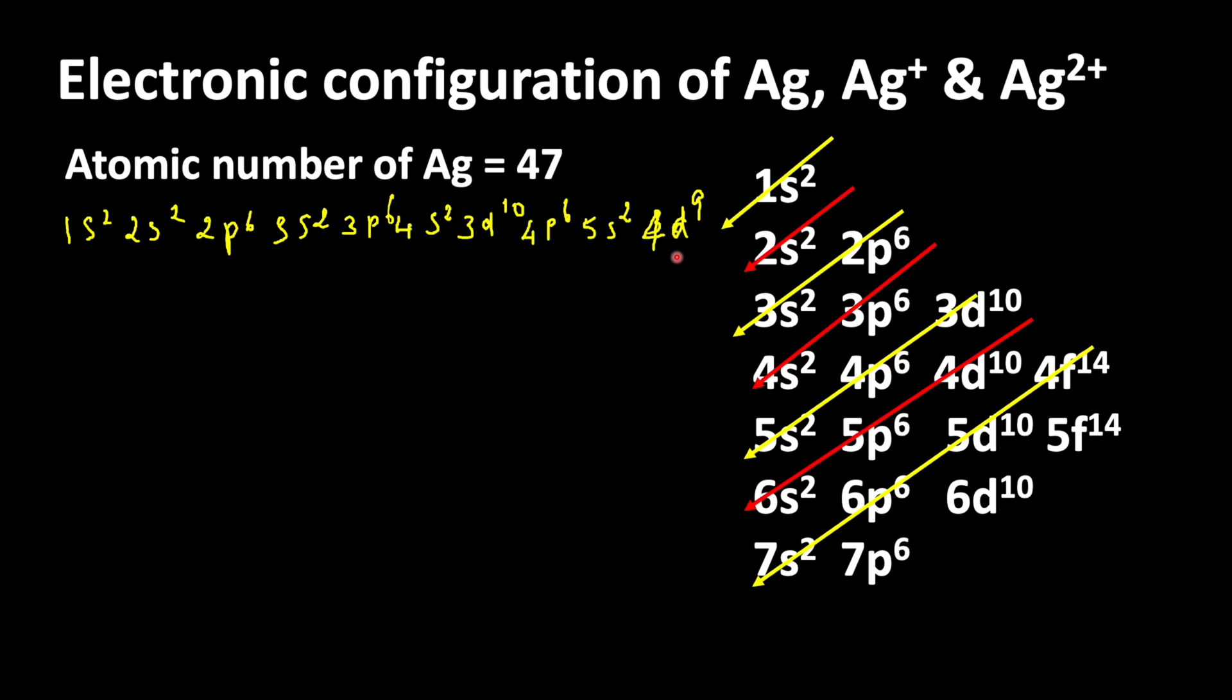For the d orbitals, the maximum number of electrons is 10. So if the d orbital gets one more electron, it becomes completely filled. That is why one electron from the 5s orbital will move to the 4d orbital and make it completely filled.